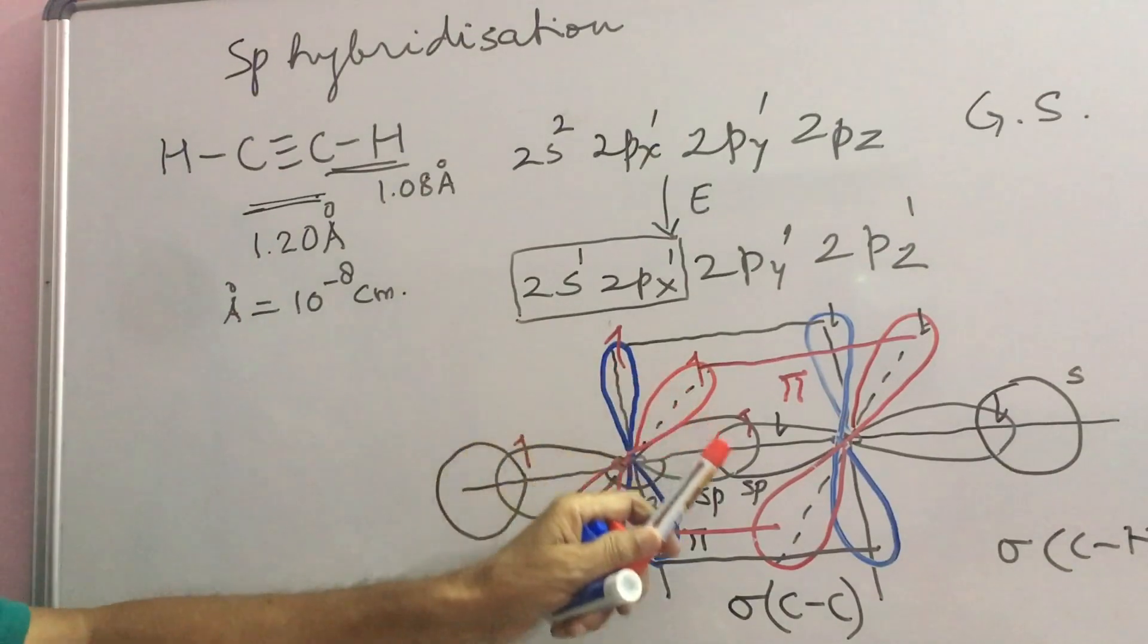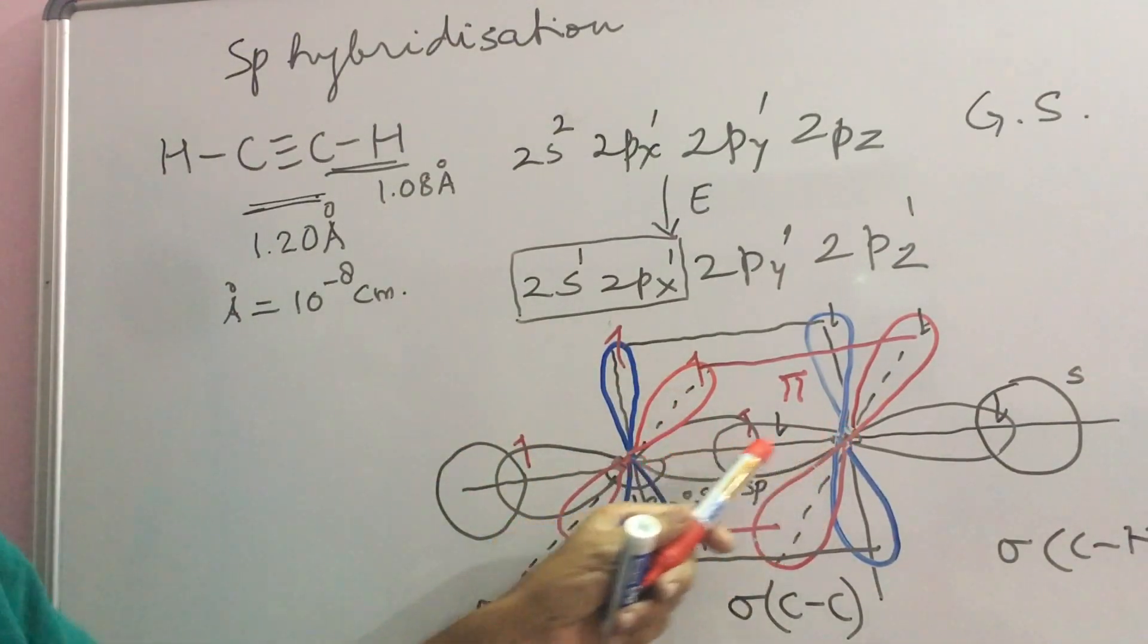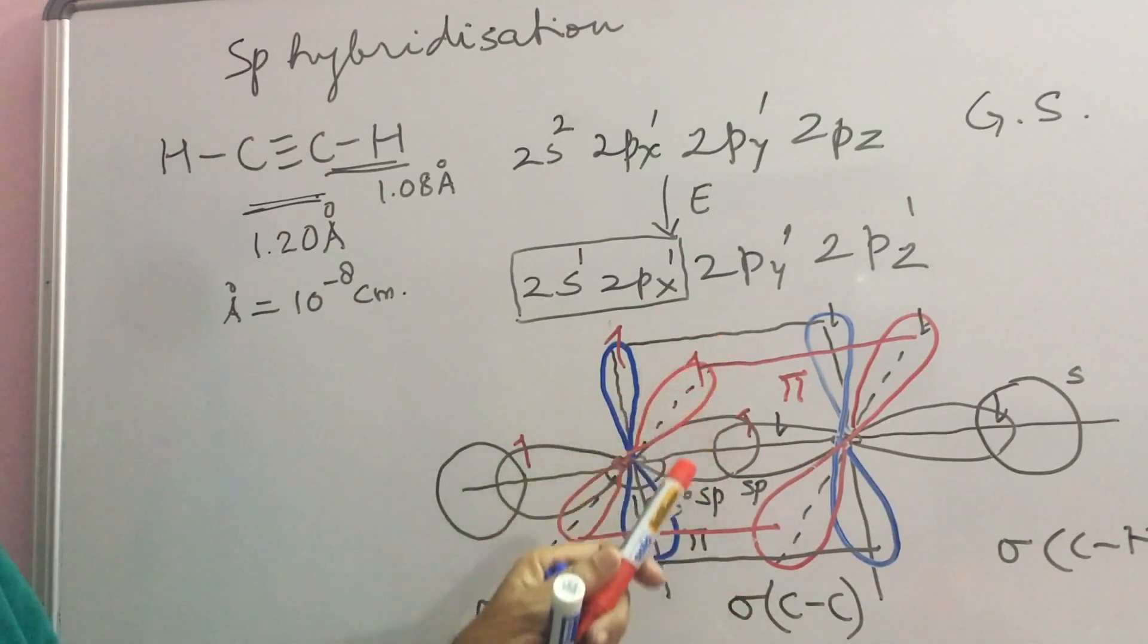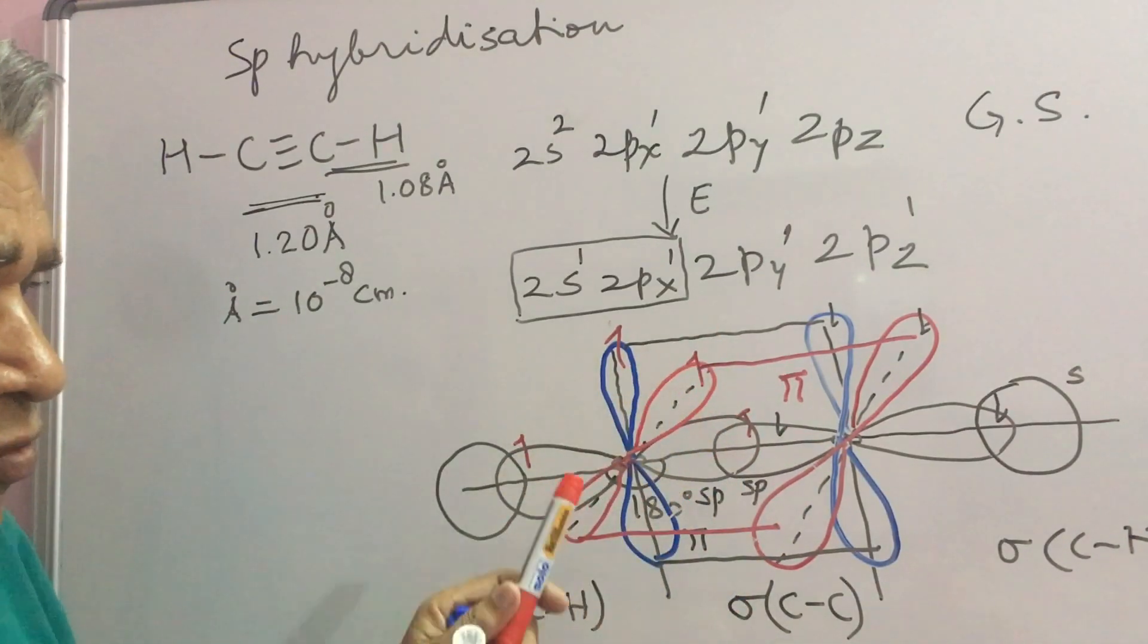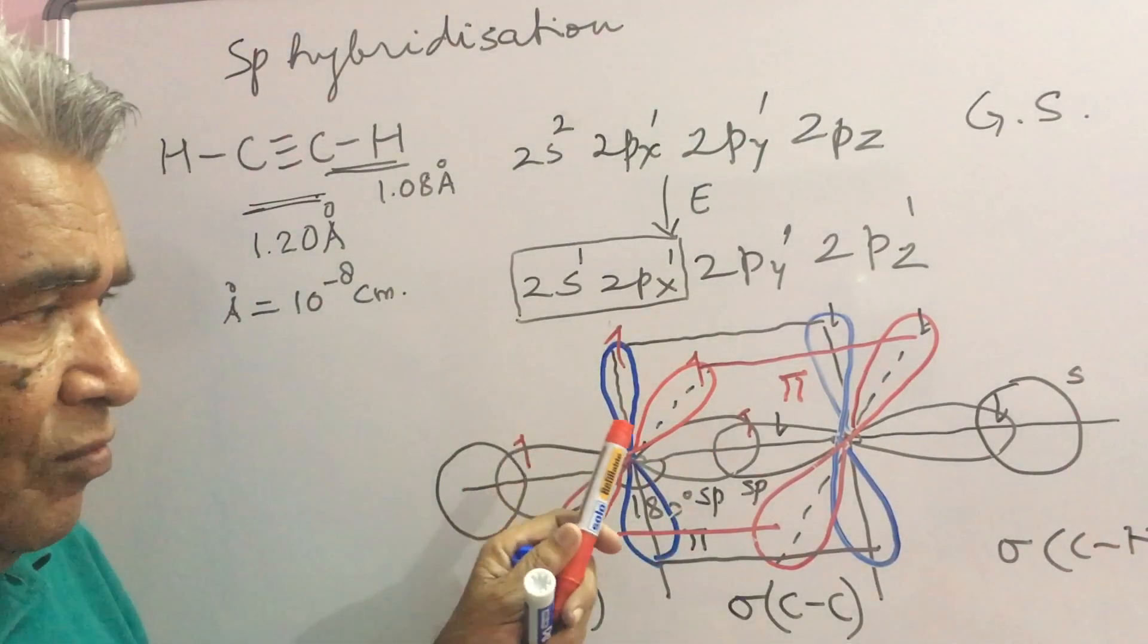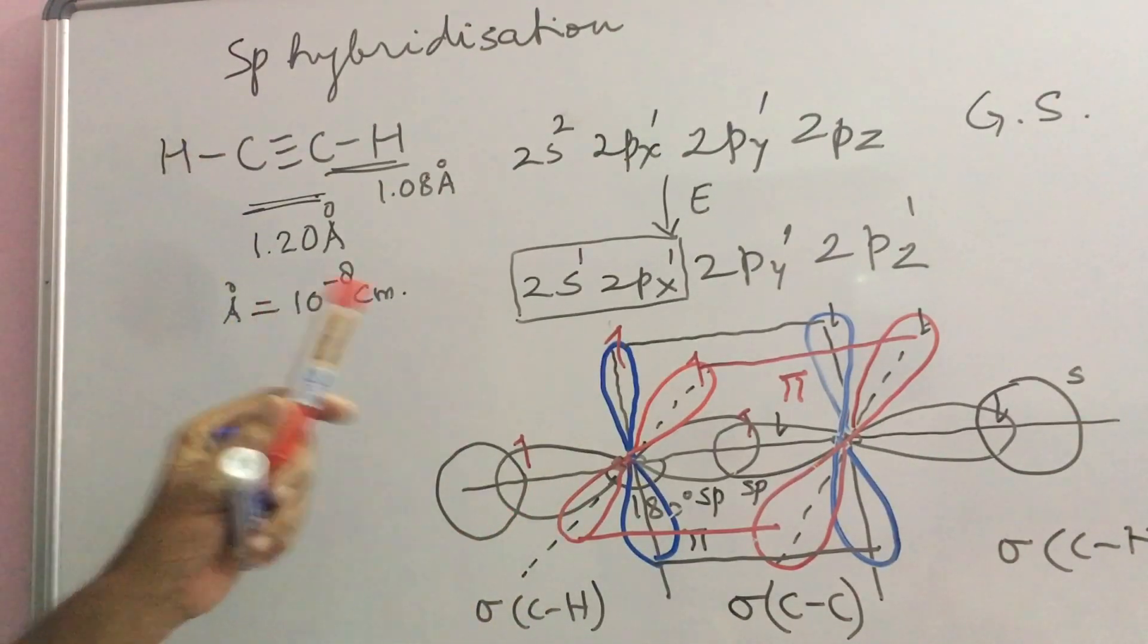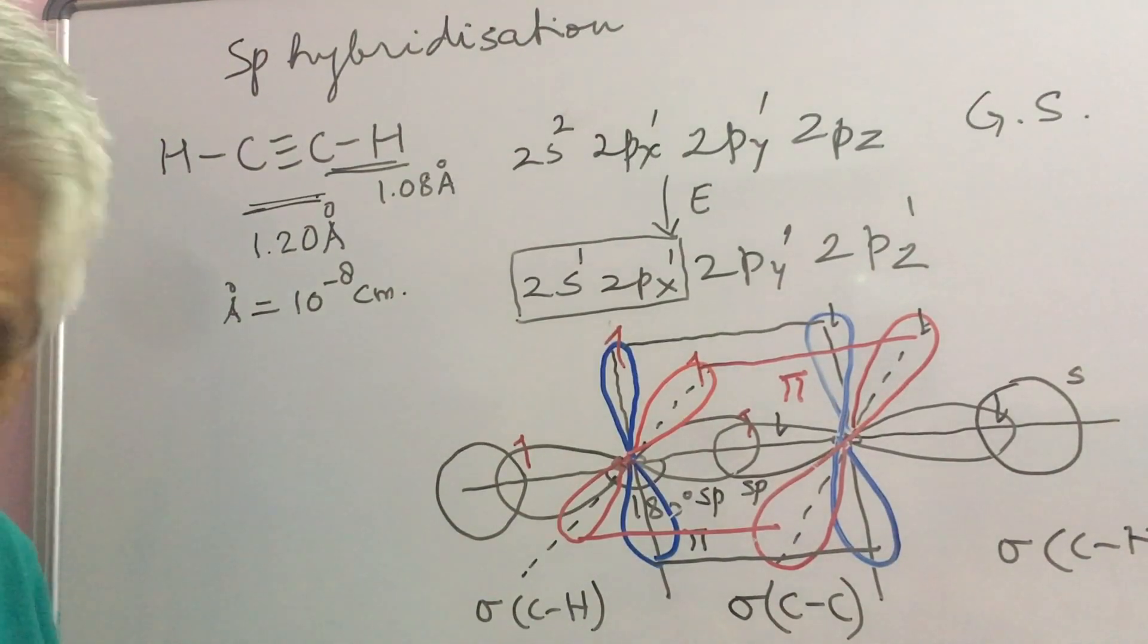These Pi electrons being away from the nucleus are more available for reaction. So, sigma electron pair is the least reactive while Pi are more reactive. So, we will see many reactions with double bonds and triple bonds while sigma bonds react less.